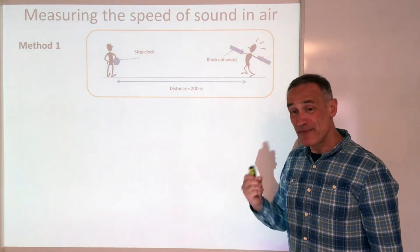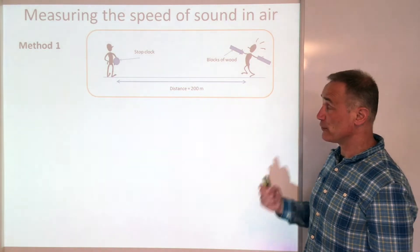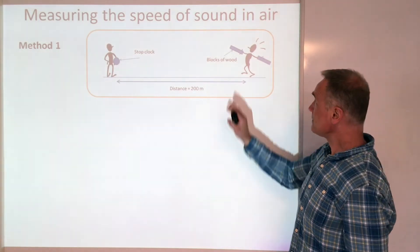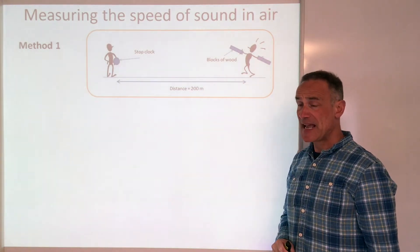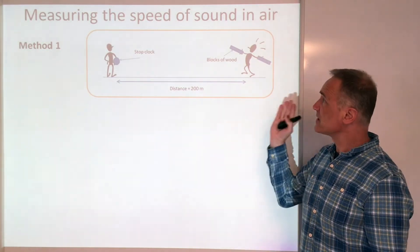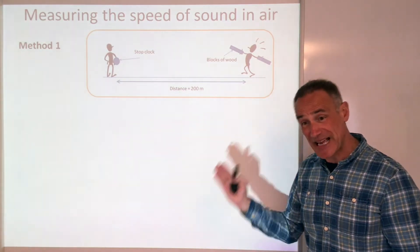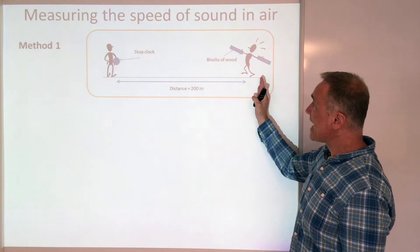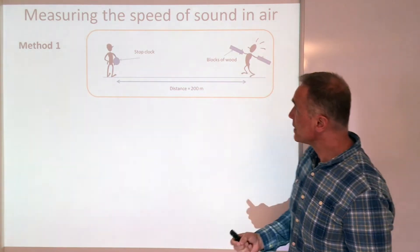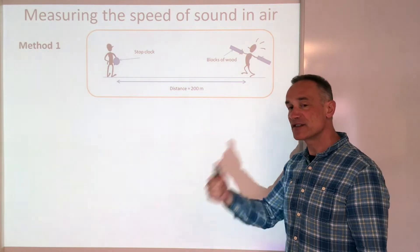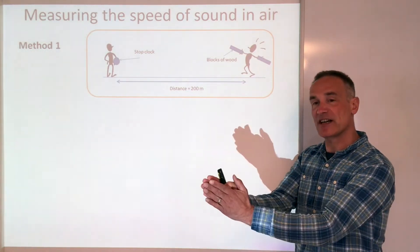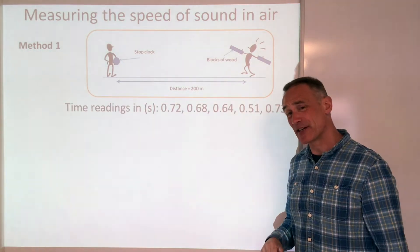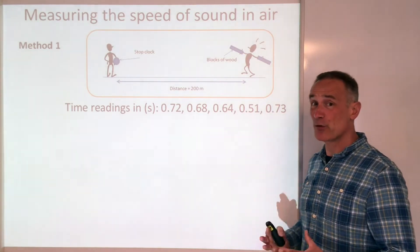Now the next thing is how do we actually measure the speed of sound? This is a practical you need to know. The first method: you've got someone at the other end with a stop clock, and someone with wooden blocks at this end. If they clap the wooden blocks, because light travels so fast — about eight times around the world in one second — you actually see them do it instantly. But the sound takes time to get there. So the person starts a stopwatch when they see the blocks touch and stops it when they hear the sound. Now this isn't very accurate, because you've got reaction time, which is quite significant.